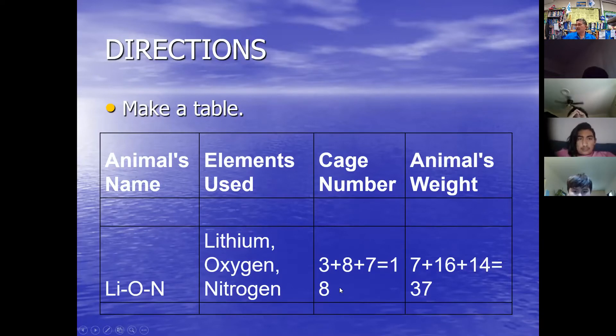The cage number is going to be the atomic numbers added up. The atomic number of lithium is three, oxygen is eight, nitrogen is seven. I had a colleague who was a chemistry teacher, and she said, I want you to memorize the first 40 elements. I don't even know the first 40 elements. It's just the ones that you use a lot, you're going to know. And as you do this project, you're going to see that the ones you use a lot, you're going to just know them.